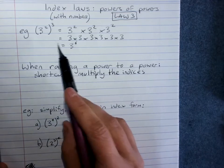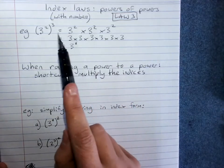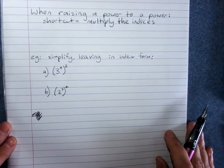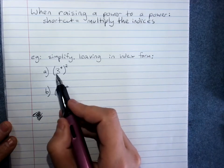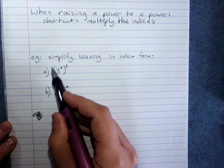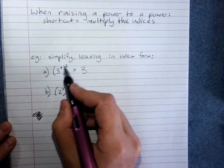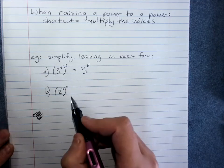So we don't have to do this whole expanding thing because we can see that there's a shortcut and it's easier. So simplify: 3 to the power of 4 all raised to the power of 2. That's 3 and we multiply the indices, 4 times 2 is 8.